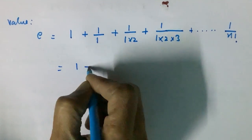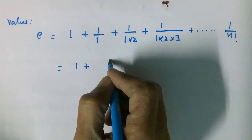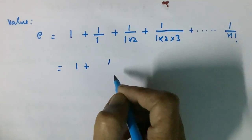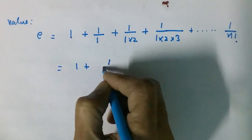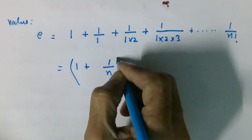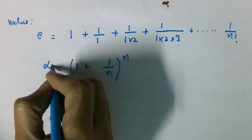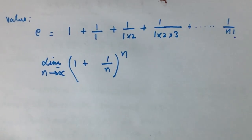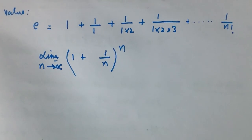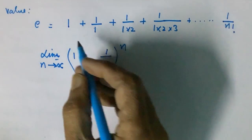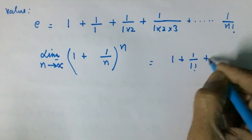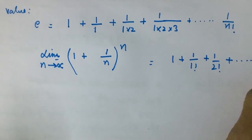We can also say that e equals the limit of 1 plus 1 by N, when N tends to infinity. It can also be written as 1 plus 1 by 1 factorial plus 1 by 2 factorial, and so on, plus 1 by n factorial.